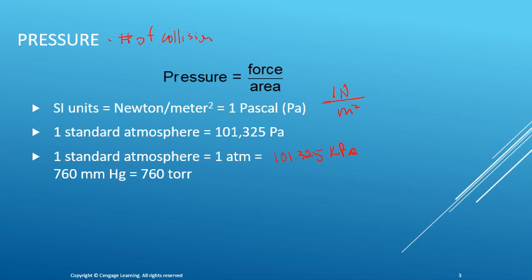There are some other units you're probably familiar with. Pounds per square inch — there are 14.7 psi found in one atmosphere as well. If you are a meteorology fan and like to watch the hurricane hunters, you'll see them talk about it in terms of bars and millibars, so you have that as a unit of pressure as well.